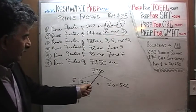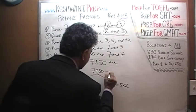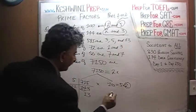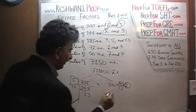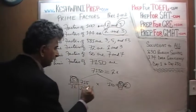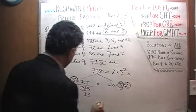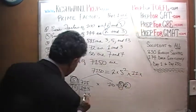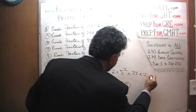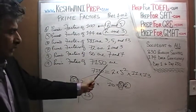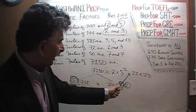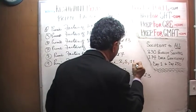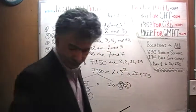So 7,150 can be written as 2 times 5 squared times 11 times 13. There is a 5 from the 10 and a 5 from dividing 715 by 5, giving 5 squared. Therefore, the prime factors of 7,150 are 2, 5, 11, and 13.